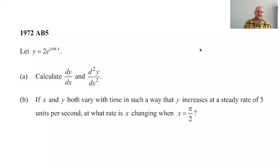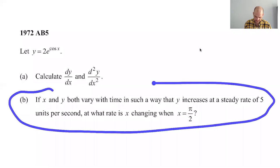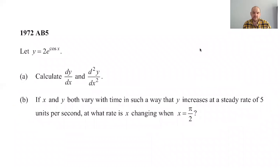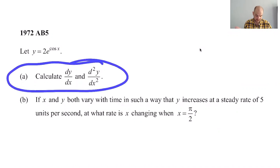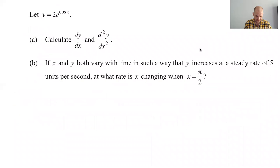All right, in this video we're going to take a look at 1972 AB5, so that's number five on the AP Calculus exam from 1972, which was a really long time ago. The reason we're looking at it is because part B here is a related rates type question. I'm going to do part A, but really I'm interested in part B. Part A is as straightforward as it gets.